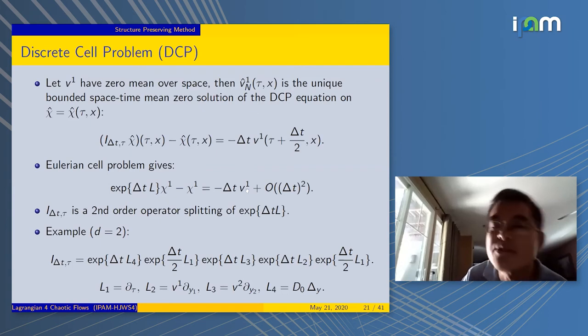In fact, this I_δt,τ operator has an explicit form. If you split the L into a sum of four operators, and if you do an operator splitting like this, that's exactly the I_δt that we talked about. This is actually an approximation of the e^{delta T L}. That's the connection.